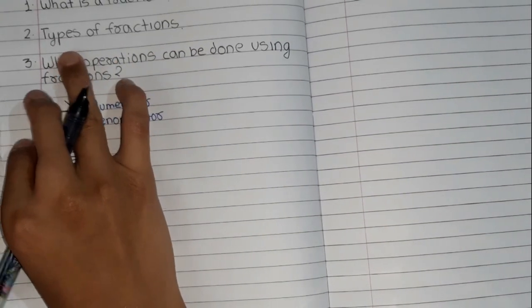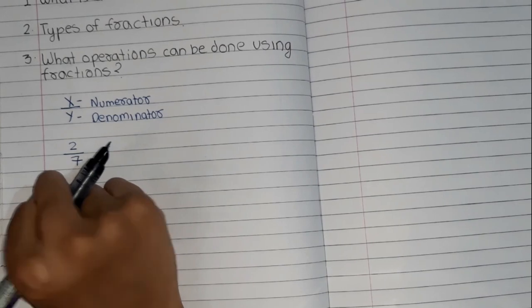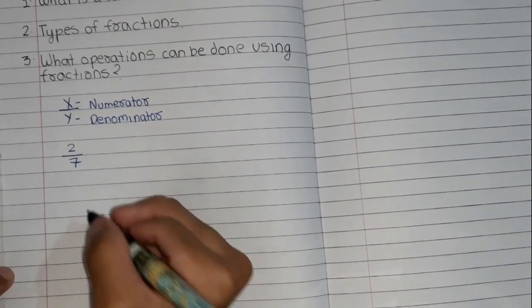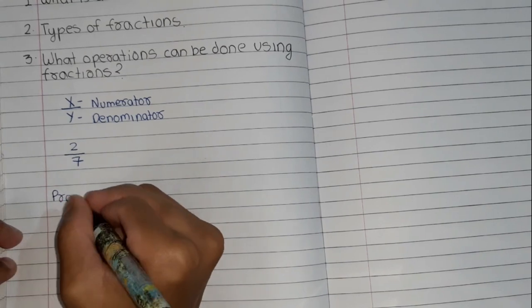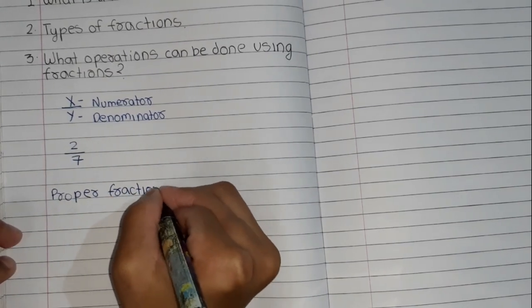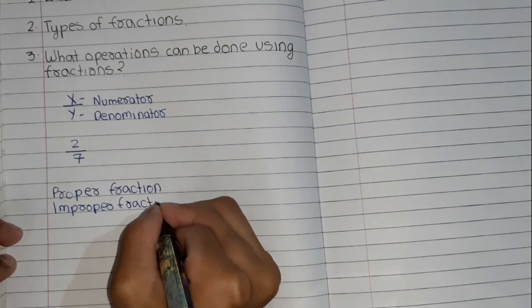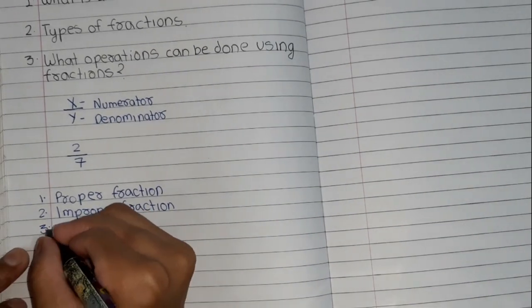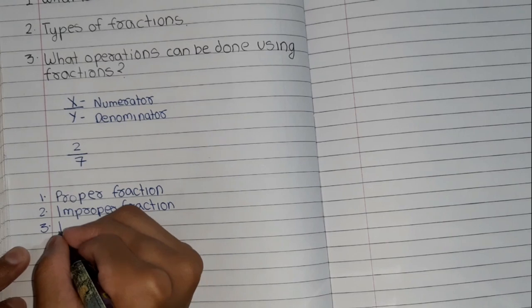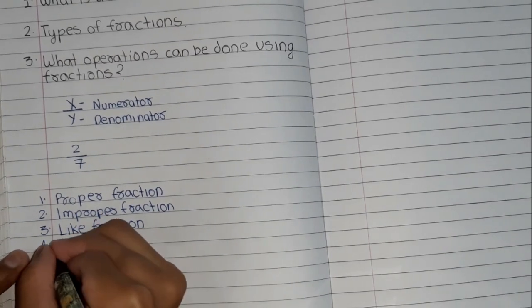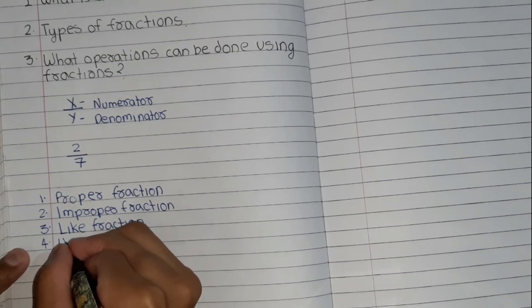Now I am going to talk about types of fractions. I will write all the types of fractions: proper fraction, improper fraction, the third one is like fraction, fourth one is unlike fraction.